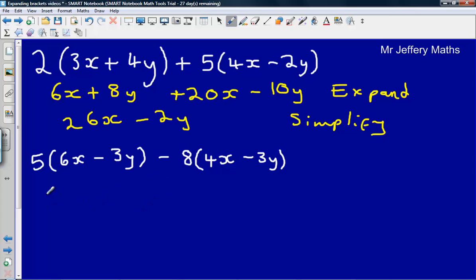So we've got to calculate this one here. 5 multiplied by 6x leaves us with 30x. 5 multiplied by minus 3y leaves us with minus 15y. Then we've got,